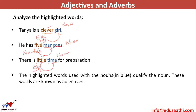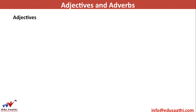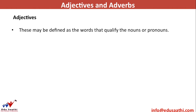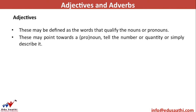These words — clever, five, and little — tell you about the qualities of nouns. Such words that tell you about the quality of a noun or a pronoun are known as adjectives. Adjectives may be defined as words that qualify nouns or pronouns. For example, in 'She is wearing a red shirt,' red tells you the color of the shirt — it is qualifying the noun 'shirt' — so 'red' becomes an adjective.